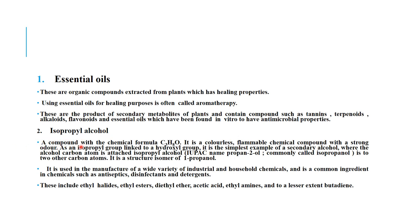Isopropyl alcohol is a compound with the chemical formula C3H8O. It is a colorless, flammable chemical compound with a strong odor. It is the simplest example of a secondary alcohol, where the alcohol carbon atom is attached to two other carbon atoms. It is the structural isomer of 1-propanol and is used in the manufacture of a wide variety of industrial and household chemicals, and is a common ingredient in antiseptics, disinfectants, and detergents.